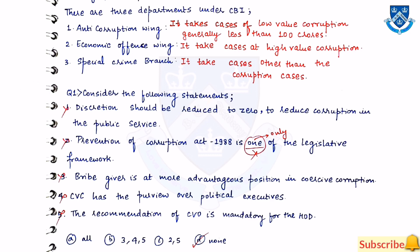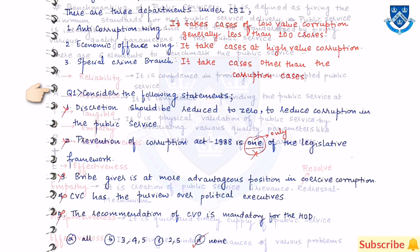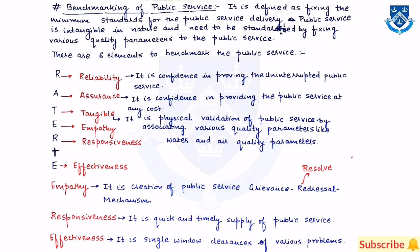One practice question: consider the following statements — here none of the given options is correct. The next topic is benchmarking of public service, defined as fixing the minimum standards for public service delivery. Public service is intangible in nature and needs to be standardized by fixing various quality parameters.